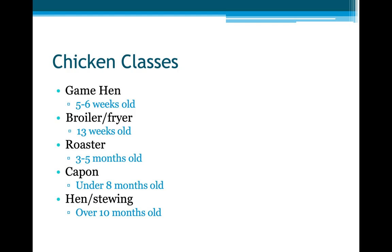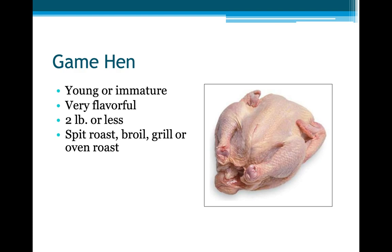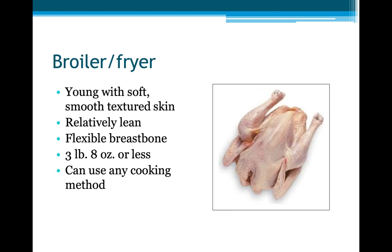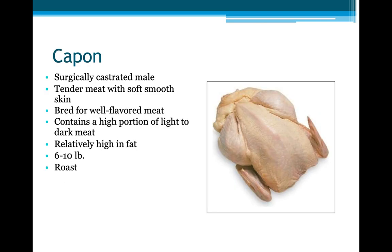There are various classes of chicken, including game hen, broilers, roosters, capons, and hens. Game hen is young or immature and very flavorful, used for grilling and oven roasting. Broiler or fryer has young, soft, smooth-textured skin and is relatively lean with a flexible breastbone. Capon is a surgically castrated male having tender meat with soft smooth skin, bred for well-flavored meat, containing a high portion of light and dark meat and relatively high in fat.